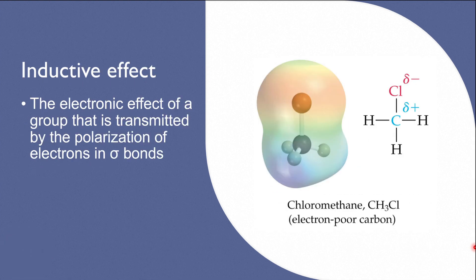Due to the difference in electronegativity between two atoms linked by sigma bonds, the bonding electrons will displace towards the more electronegative atom, and that atom exhibits a partial negative charge. The electronic effect of a group transmitted by the polarization of electrons in a sigma bond is called the inductive effect.